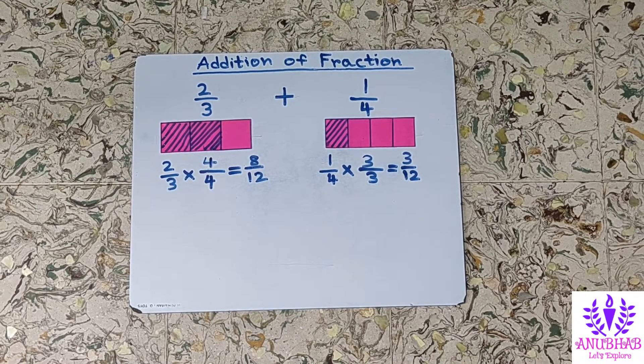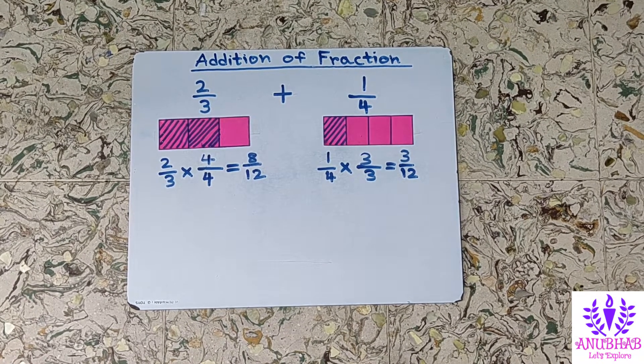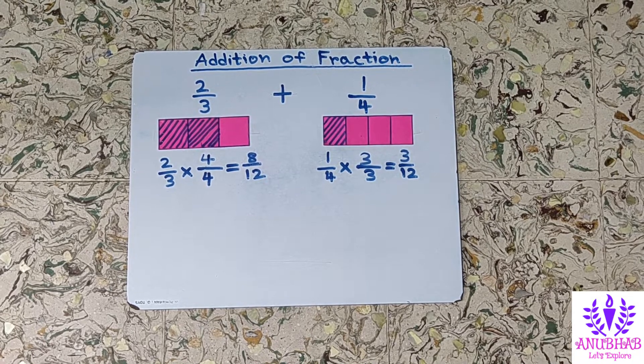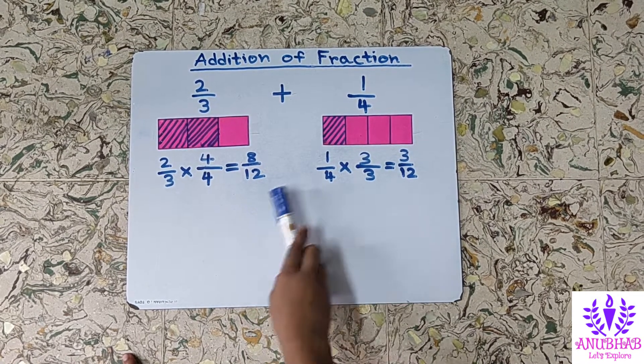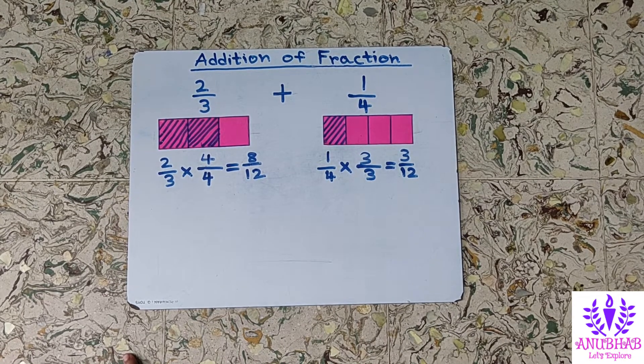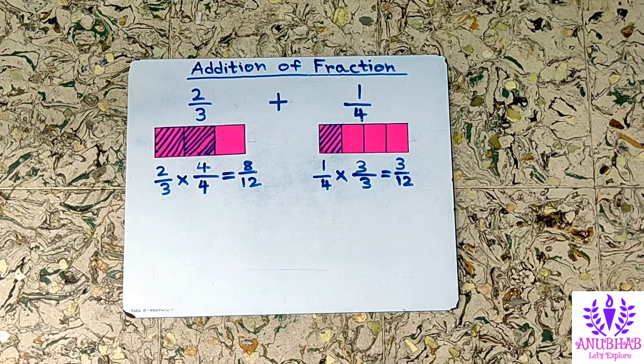Now we will take another strip of colored paper and fold it into 12 equal parts. Because in both cases we have got the denominator 12, so we have to fold it into 12 equal parts.